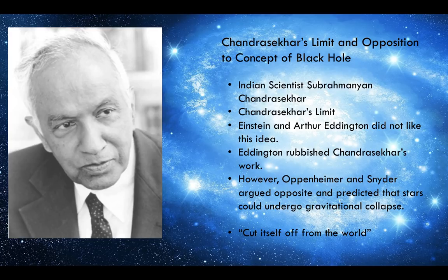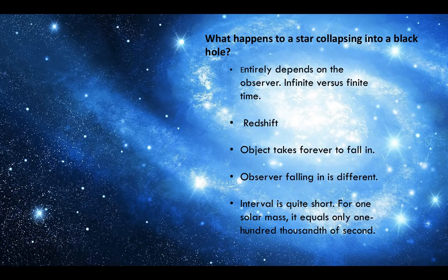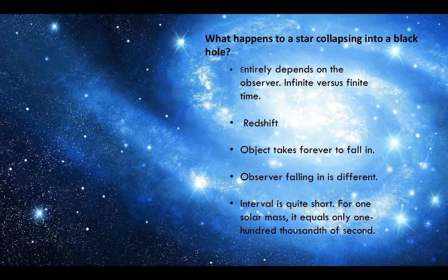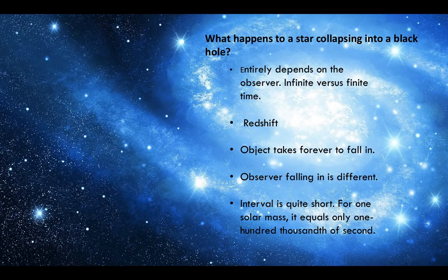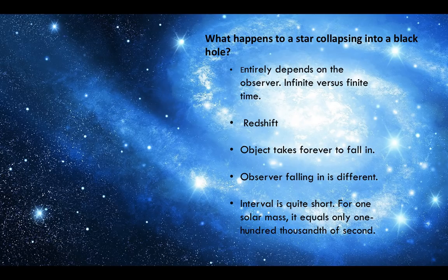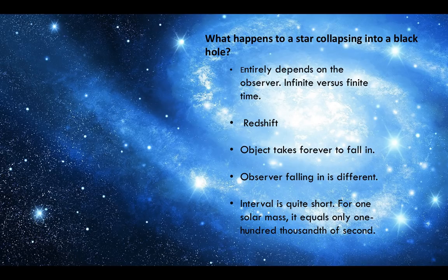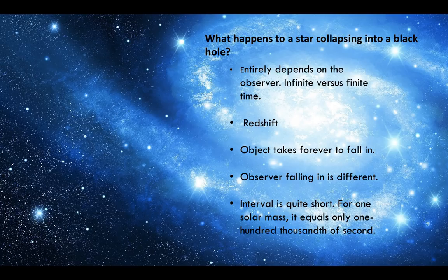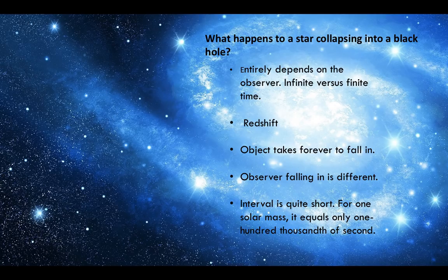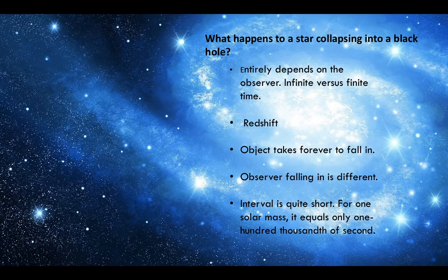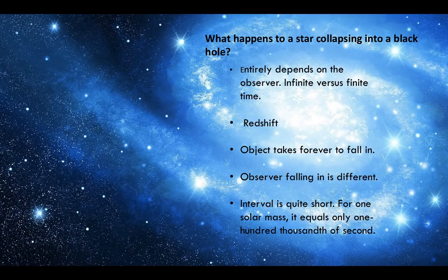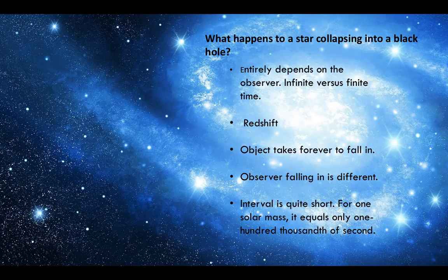There was also a mystery to what happens to a star collapsing into a black hole. Further work by Oppenheimer and other scientists indicated that this entirely depends on the observer. Because of the strong gravity exhibited by the star, time would pass more slowly near its surface. A stationary observer at rest at a safe distance from a star would see radiation from the collapsing star gradually shifting to the red portion of the electromagnetic spectrum. The combined action of the Doppler effect and time dilation effects, combined with a strong gravitational field, would make the star invisible, and its image would quickly vanish from view in one hundred thousandths of a second for one solar mass.